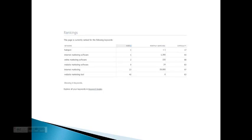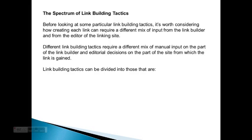The next section is the page rank, and that's also included in the dashboard. These had to be split because of the presentation. Here are the rankings, and you're presented with the keyword, the rank, the monthly searches, and the difficulty for those keywords. Using these tools can help a great deal to prioritize what you need to accomplish with your link building.